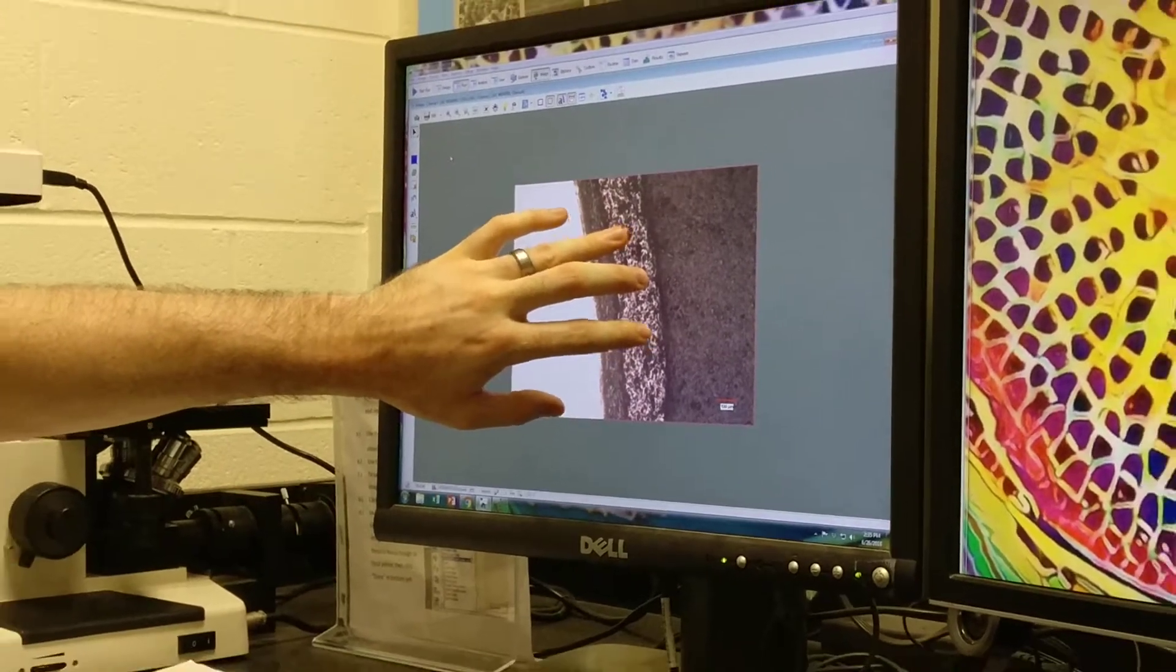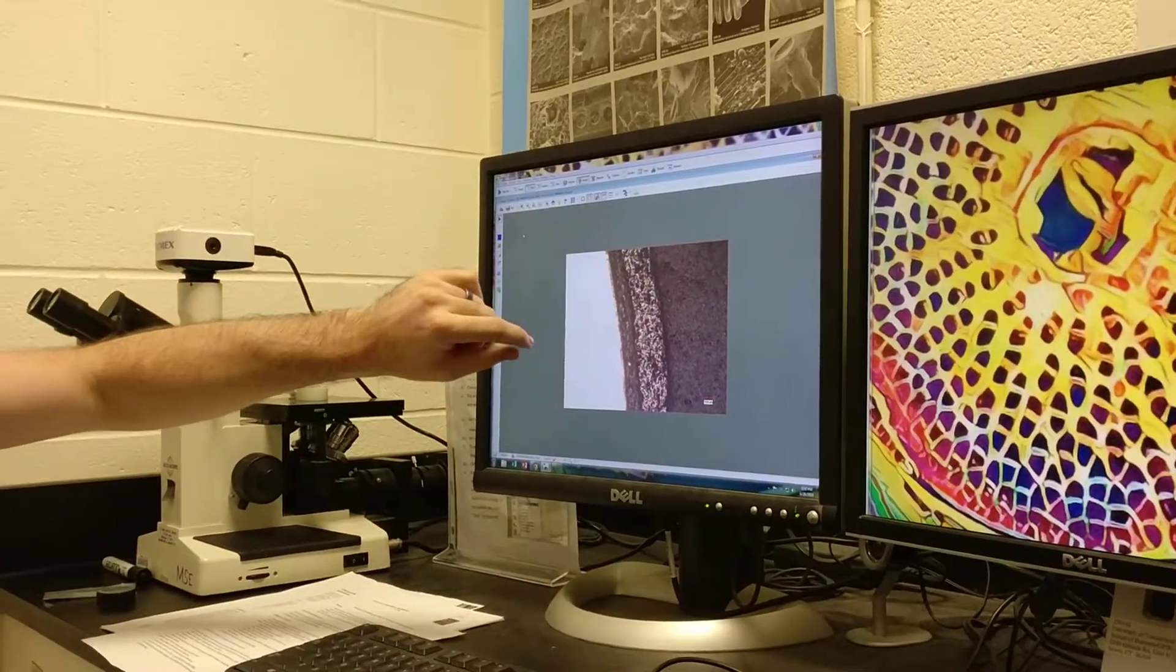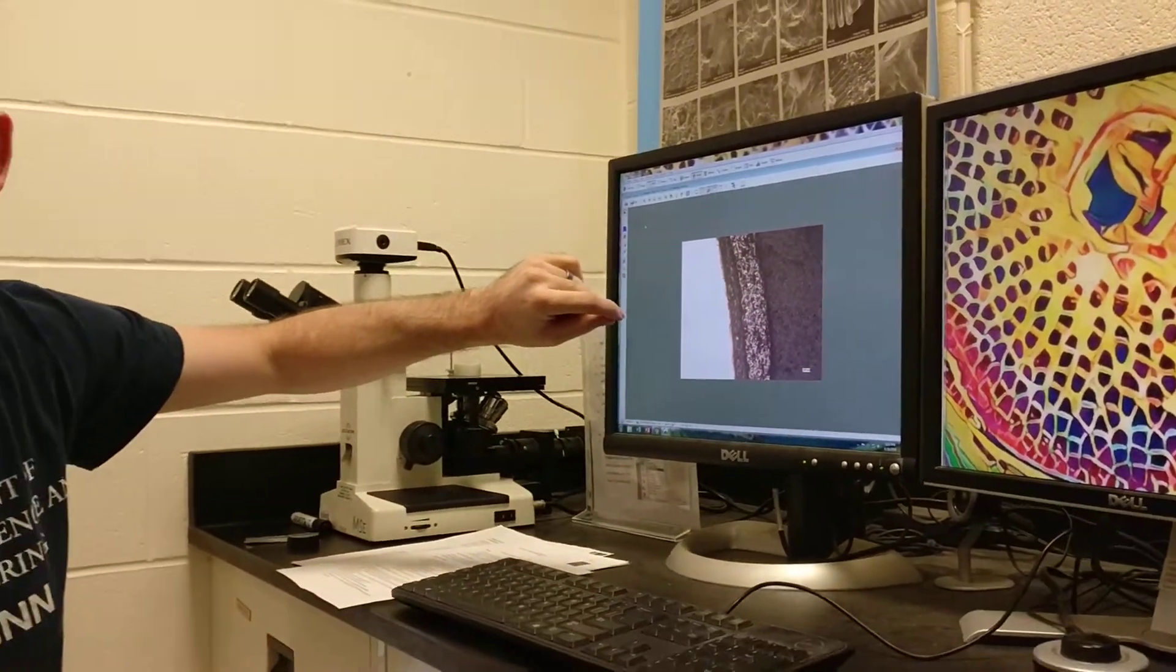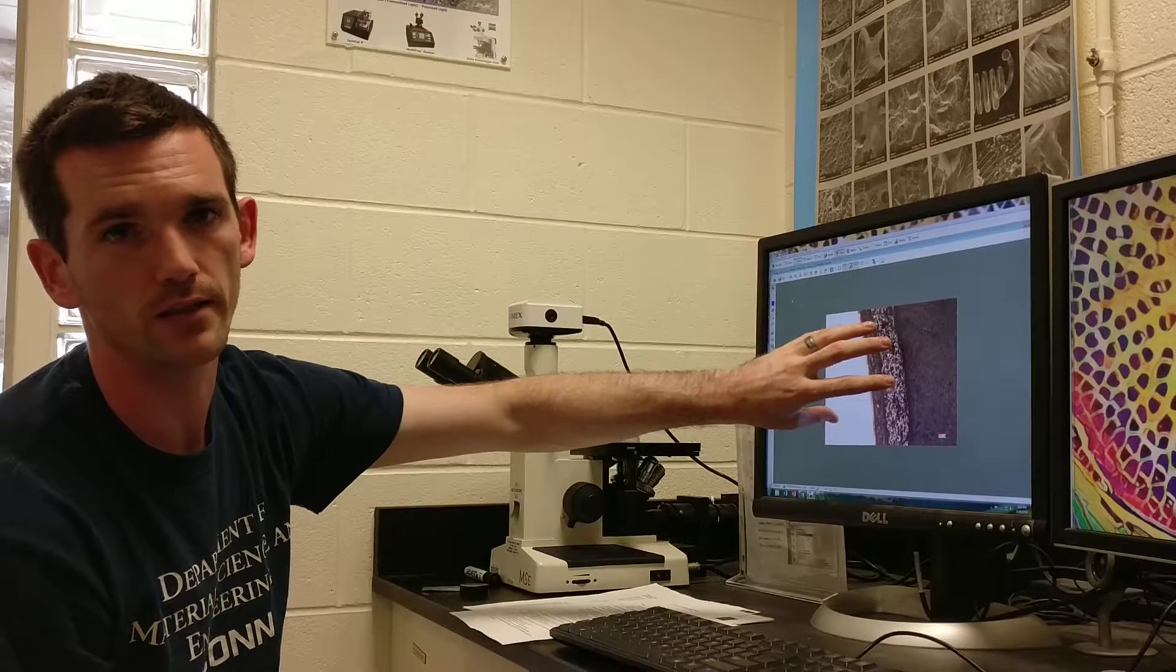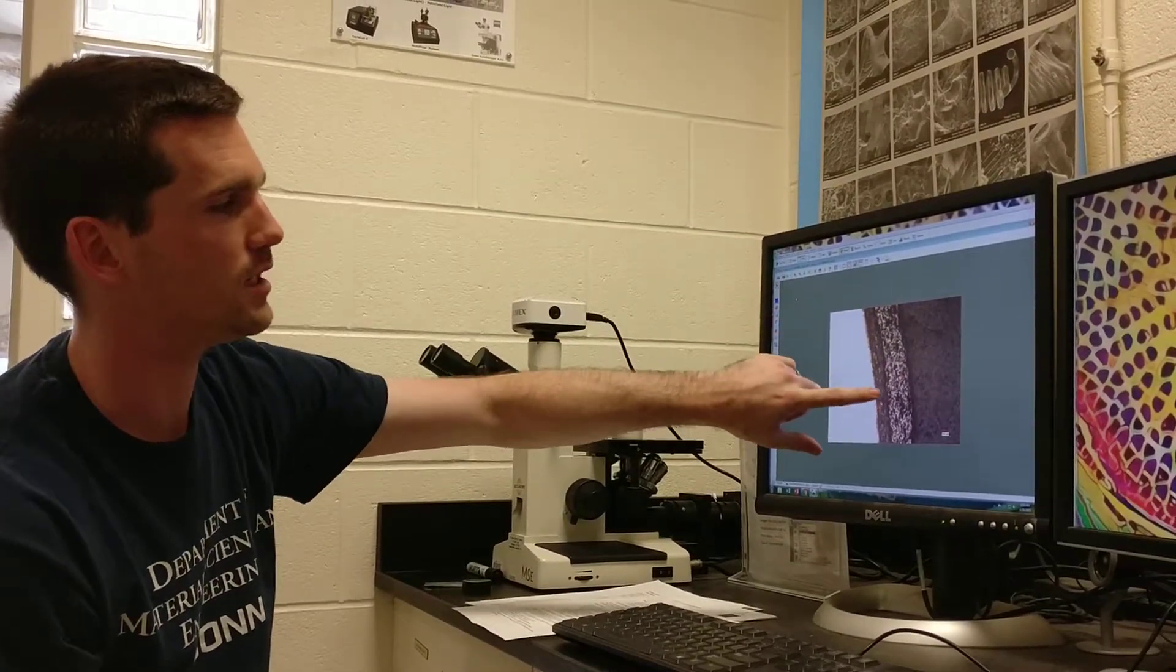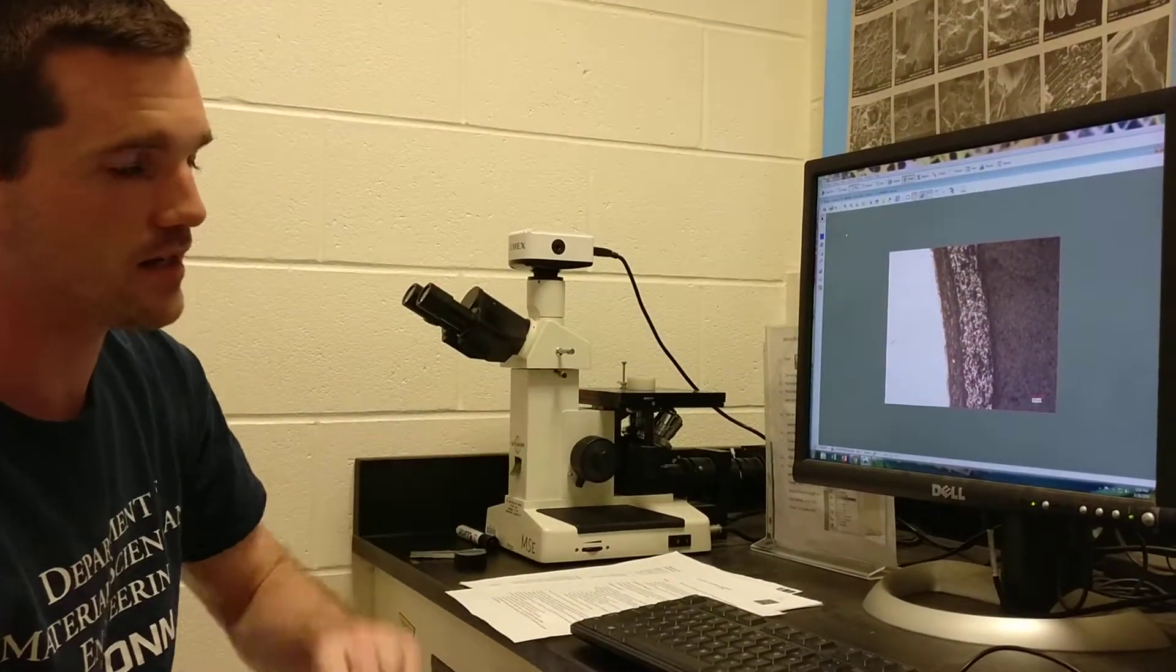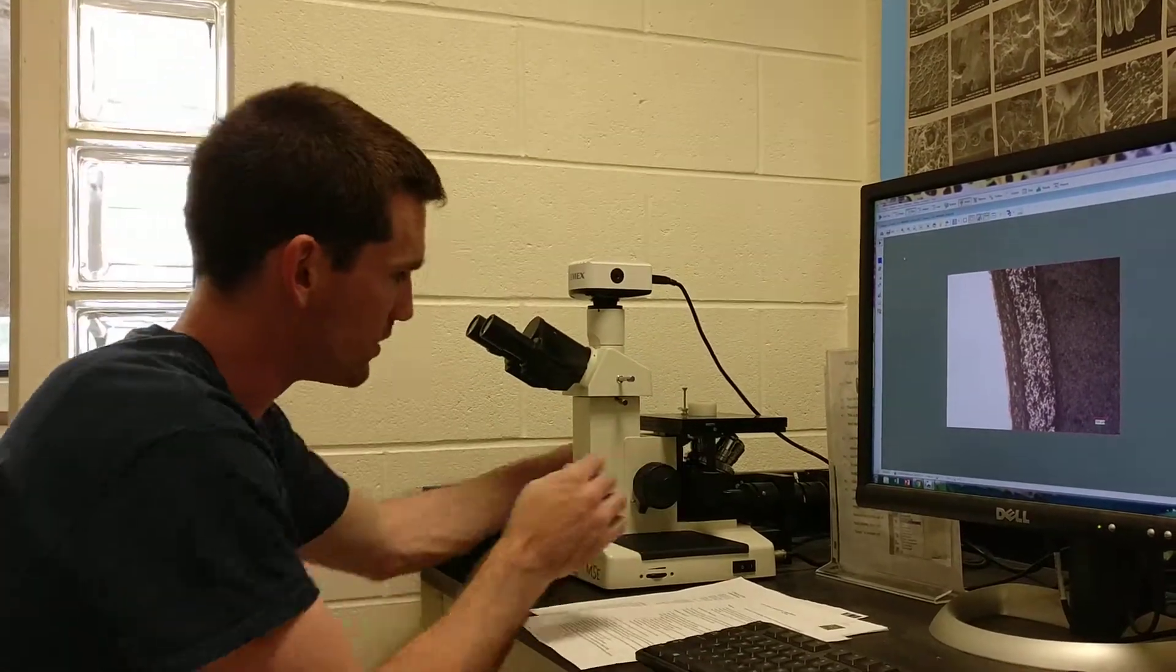This is made of yttria stabilized zirconia or YSZ. The main principle is that we have a metal bonded to a ceramic. The ceramic is used for low thermal conductivity but it will expand at a different rate than metal when it heats up. We need an intermediary layer to promote the adhesion of that thermal barrier coating, and in this lab we are going to measure the thicknesses of both coatings and quantify the porosity.